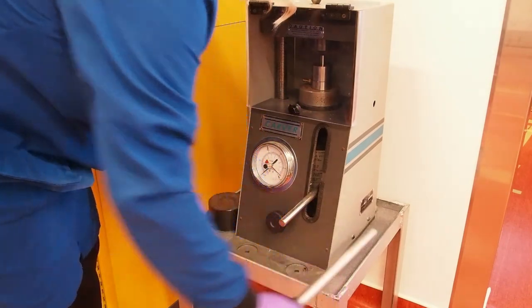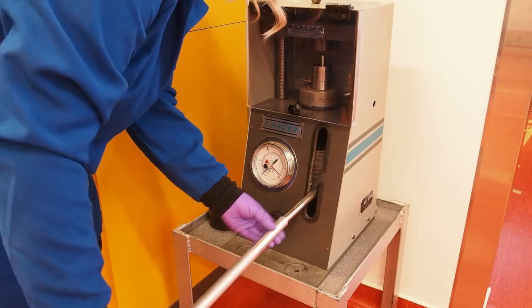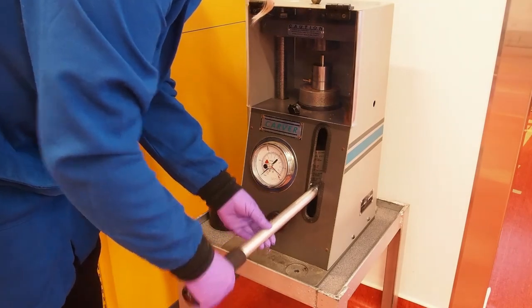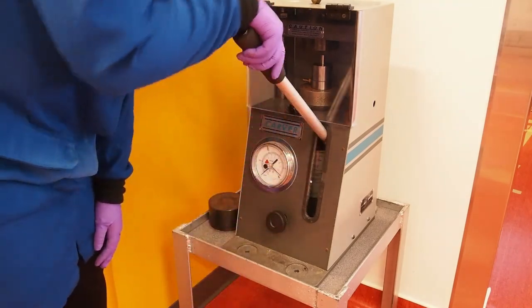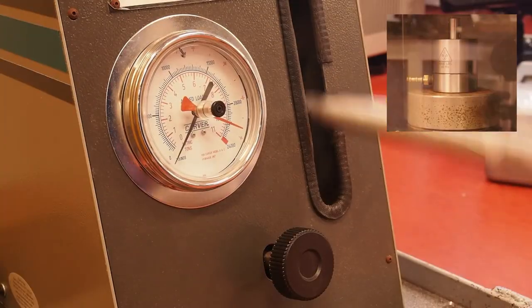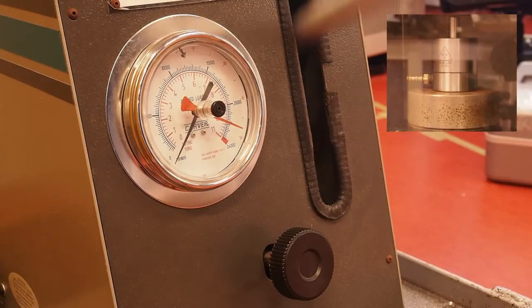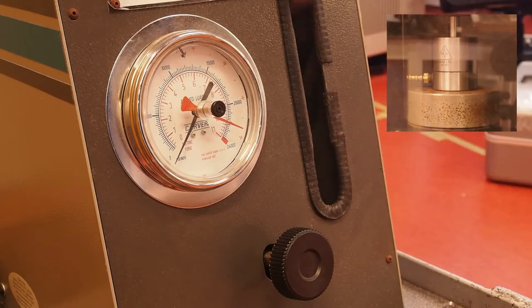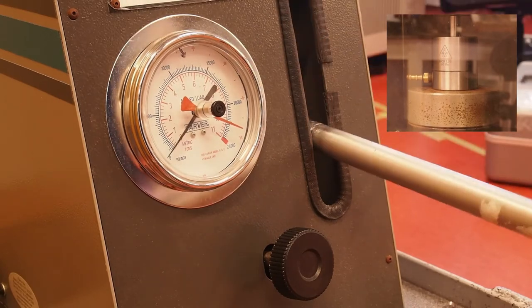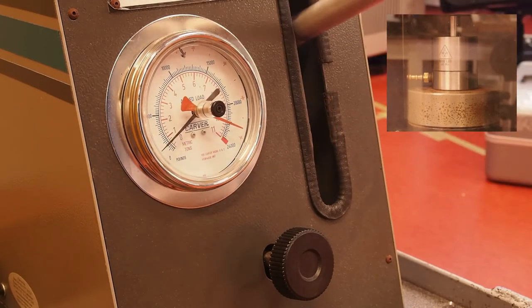Turn the pressure building knob clockwise to begin building pressure. Pick up the handle and place it onto the press lever. Pump the handle to begin building pressure. Continue to pump the handle until the pressure gauge reads 5 metric tons.